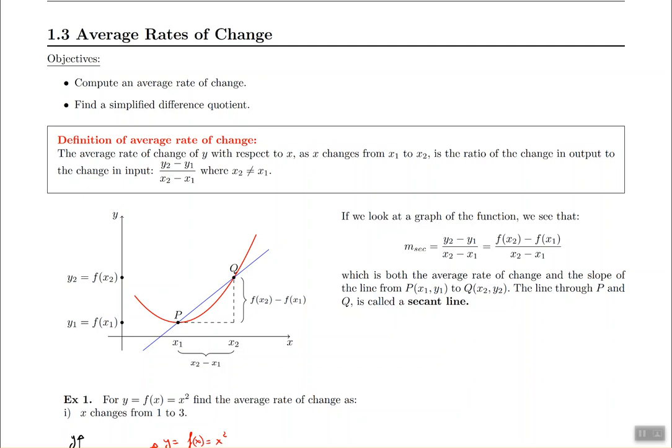Now the words average rate of change is just a fancy way of saying the slope of the line. So the average rate of change is this formula that you're seeing right here and it pretty much describes on the numerator the rise and on the denominator the run. So the rise is basically the amount between the two points vertically whereas the run is the amount between the two points horizontally.